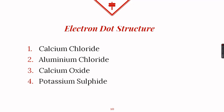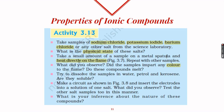For practice, you can draw the electron dot structure for the following ionic compounds: calcium chloride, aluminium chloride, calcium oxide, and potassium sulfide. We have learnt the formation of ionic compounds; now we will study a few of their properties.